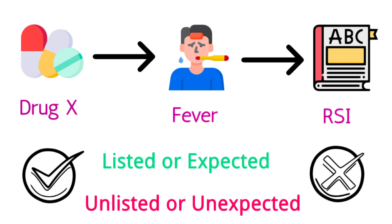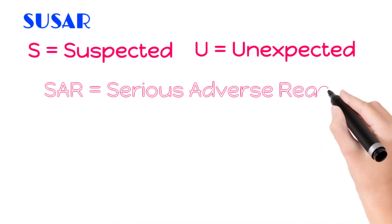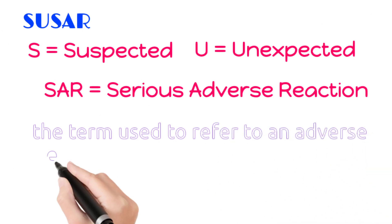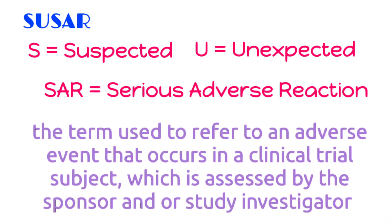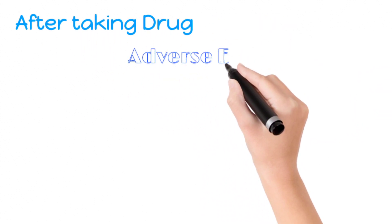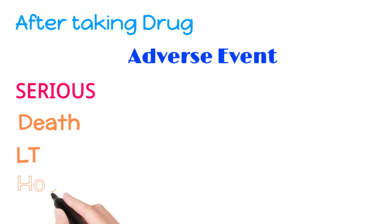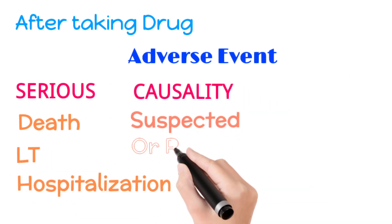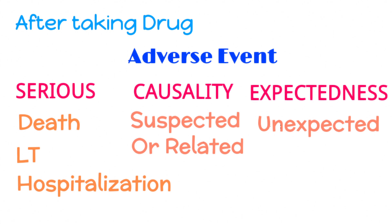The next important interview question is: what is SUSAR? The full form of SUSAR is Suspected Unexpected Serious Adverse Reaction. Generally, this term is used to refer to an adverse event that occurs in a clinical trial subject, assessed by the sponsor or study investigator. If a clinical trial subject experiences any adverse event after taking the drug which is serious in nature (e.g., death, life-threatening, hospitalization), the causality is suspected or related with the drug, and the expectedness is unexpected as per the reference safety information document — if these three criteria are met, then that event qualifies for SUSAR.